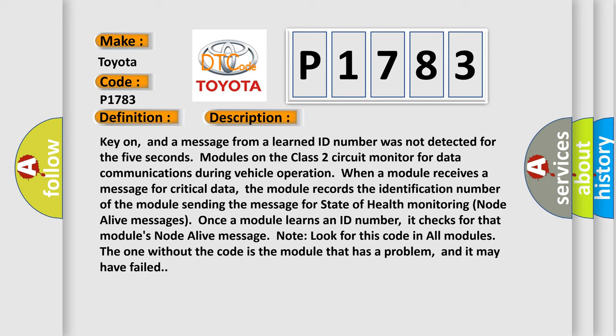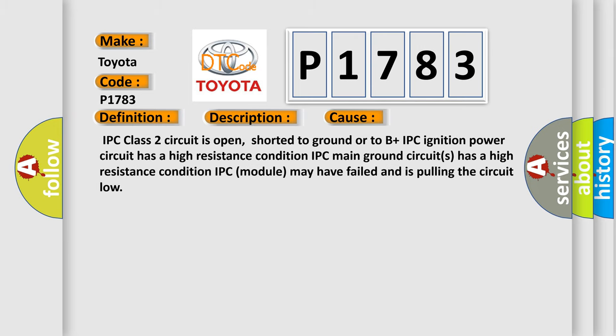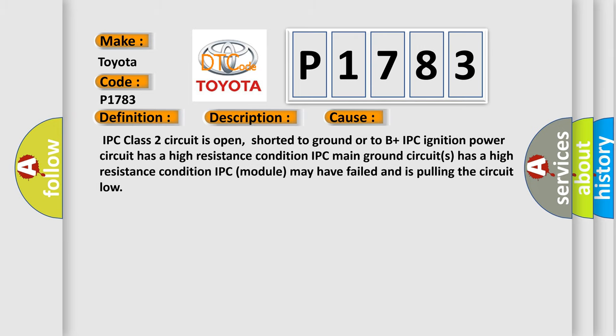Note: look for this code in all modules — the one without the code is the module that has a problem and may have failed. This diagnostic error occurs most often in these cases: IPC Class 2 circuit is open, shorted to ground or to B+; IPC ignition power circuit has a high resistance condition; IPC main ground circuit has a high resistance condition; or the IPC module may have failed and is pulling the circuit low.